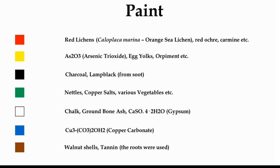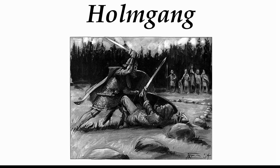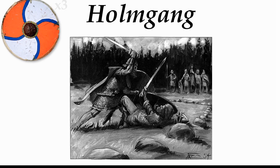In the Norse tradition of the Holmgang — a duel between two people, basically a fight to the death — we know that each man would take three shields, in expectation that they would break at least two each before one of them emerged victorious. This shows how easily these shields broke, and why warriors knew to bring spares. It also helps explain why we don't find many shields — they broke so easily.